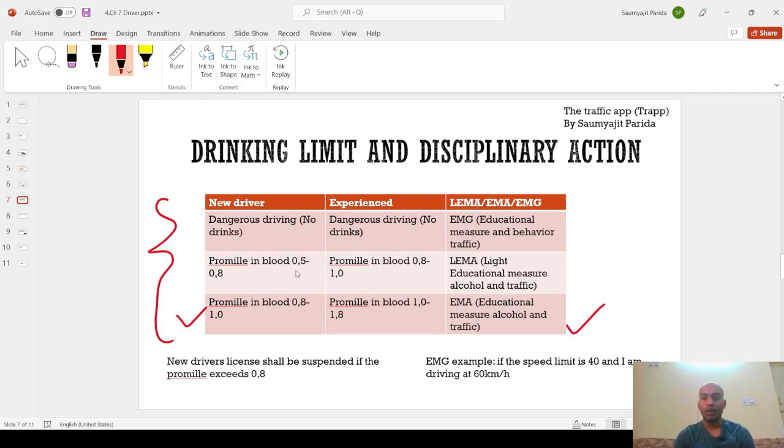Then, if the alcohol content in blood is little bit less like in the range of 0.5 to 0.8 for a new driver and 0.8 to 1 for an experienced driver, then it is light educational measure and alcohol and traffic. I am not going into details of what one has to do in these disciplinary actions because these things you can find in the book or in online anywhere. It can be easily found.